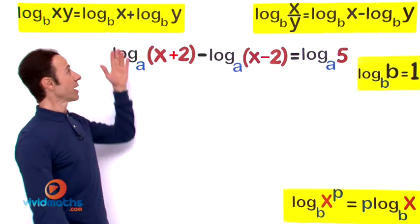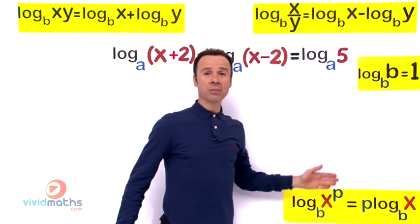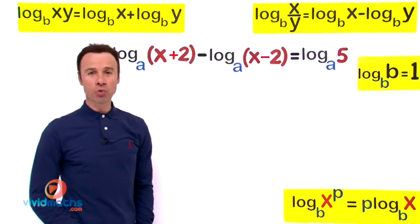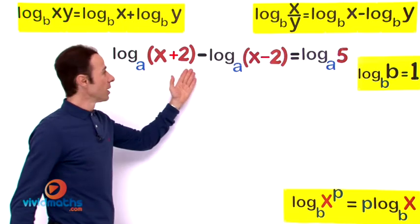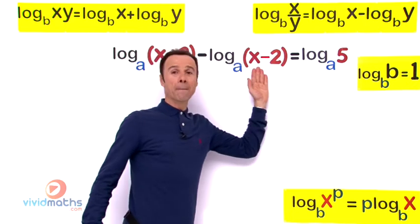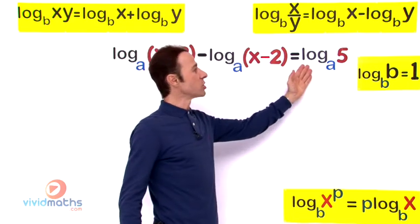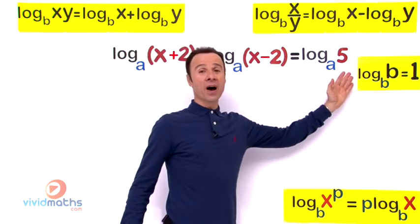The equation is log base a (x+2) take away log base a (x-2) equals log base a 5. So how are we going to solve this for x?